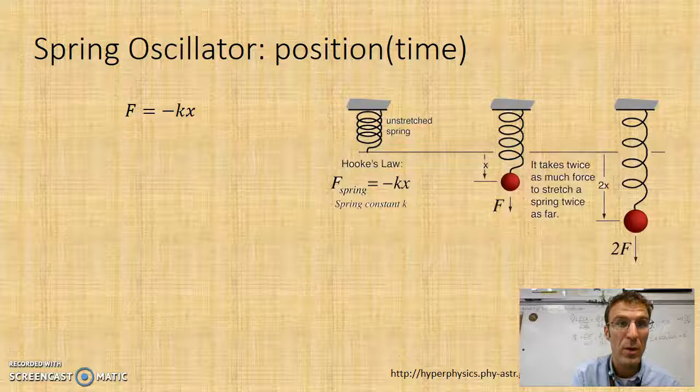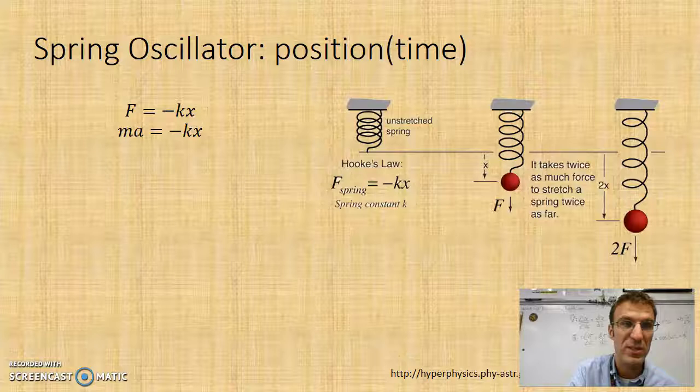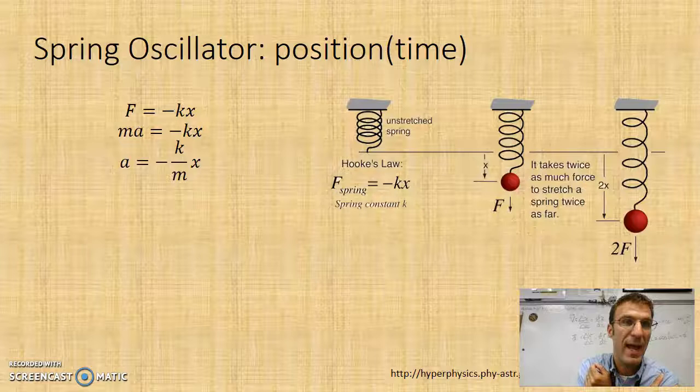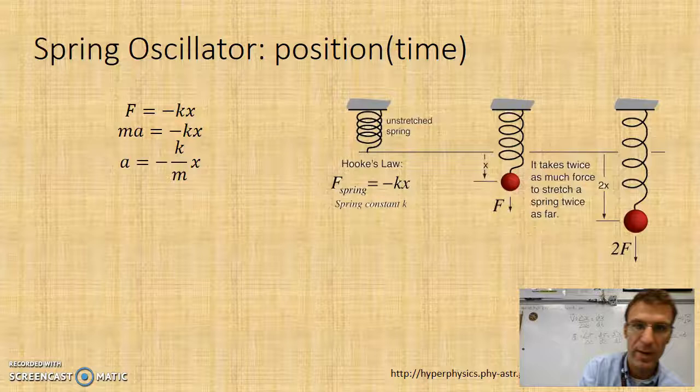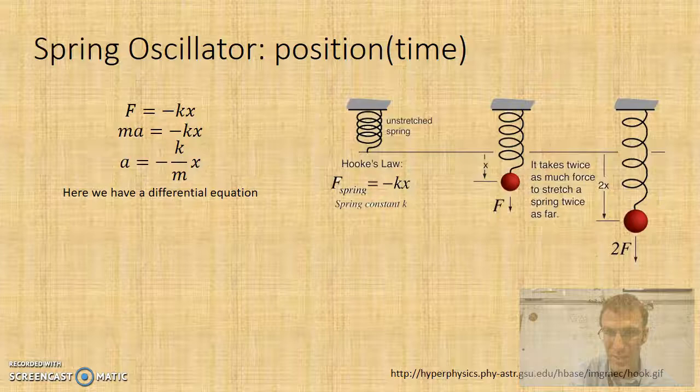We're going to use Hooke's Law, where we say the force acting on the spring is equal to the minus of the spring constant times the displacement. And I'm going to break this up by saying force equals mass times acceleration, and acceleration therefore equals negative k over m times x, the spring constant divided by the mass over x. Here's the problem, and this is a kind of higher-level mathematical problem of which you're never going to be expected to be able to derive this yourself. We have what's called a differential equation.